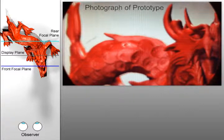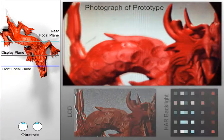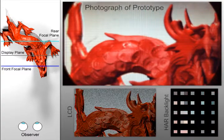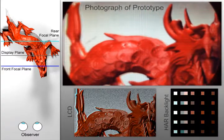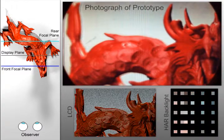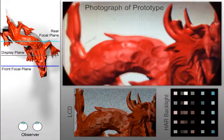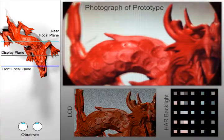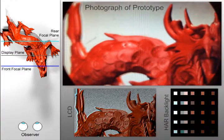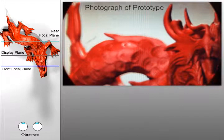This animated image sequence was captured from our prototype display. We alternate between photographs focused on the dragon's head and body. The corresponding attenuation patterns are shown in quick succession on the display. Note that each time-multiplexed backlight pattern consists of pixels corresponding to multiple views, indicating compression between correlated views.